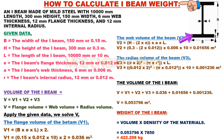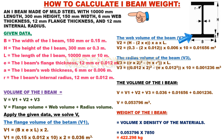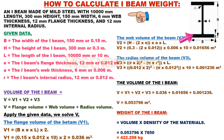We learn about how to calculate the weight of mild steel I-beam materials. For example, an I-beam made of mild steel with 10,000 mm length, 300 mm height, 150 mm width, 6 mm web thickness, 12 mm flange thickness, and 12 mm internal radius.